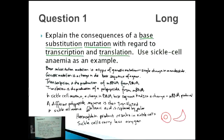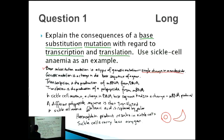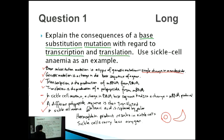Let's count up how many points we've got. We covered a single change in a nucleotide defining base substitution mutation, what a genetic mutation is, then transcription and translation, a different polypeptide sequence being translated, the specific amino acid involved in sickle cell anemia, and the result of the change in protein sequence. Counting those up: 1, 2, 3, 4, 5, 6, 7, 8 — we've got eight points, which should give us maximum marks for this long answer question.